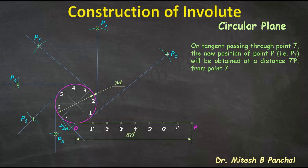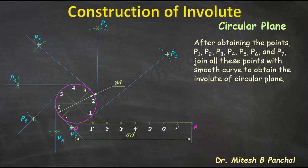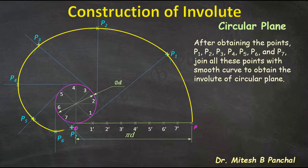Now we have obtained the different positions of point P. After obtaining them, join all these points — P, P1, P2, P3, P4, P5, P6, P7 — ending at point O with a smooth curve to obtain the involute of the circular plane. Here O is a fixed point attached to the circumference of the circle, O-P is the string wound around the circular curve. This curve is the involute for the winding case.